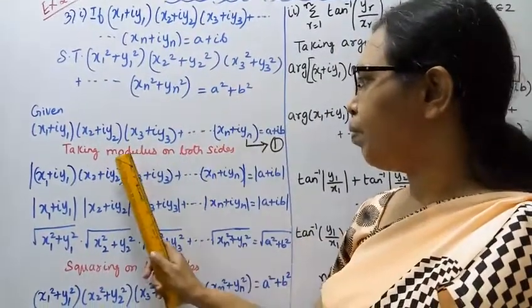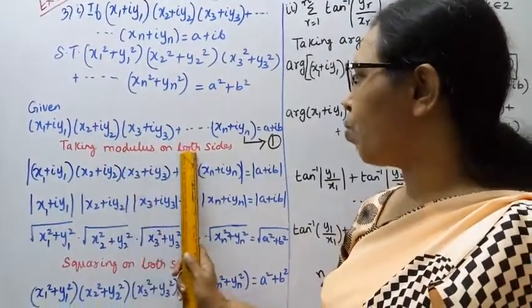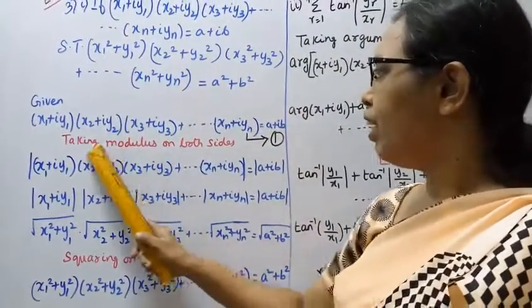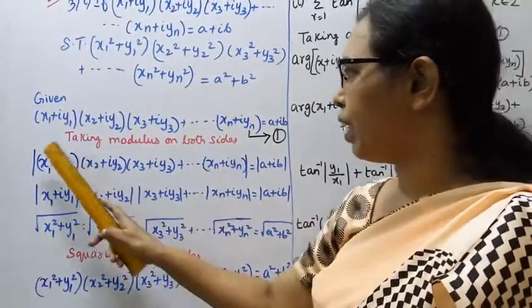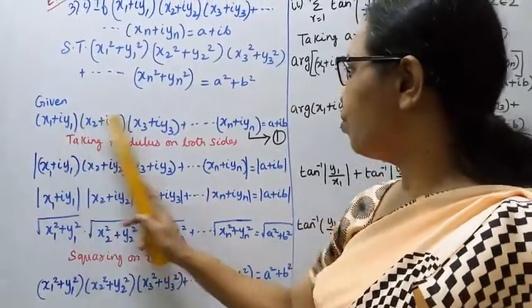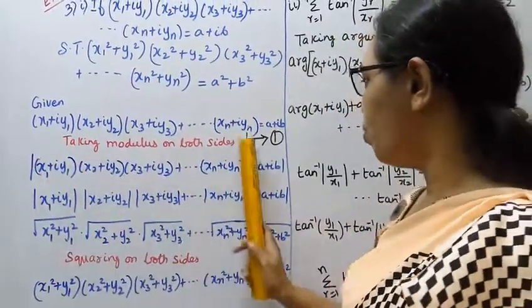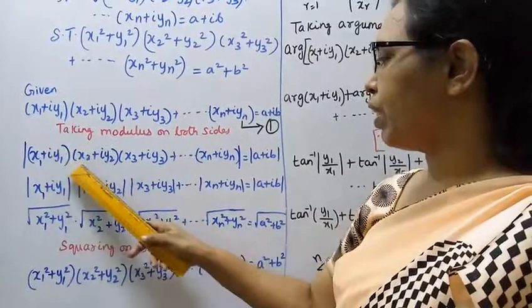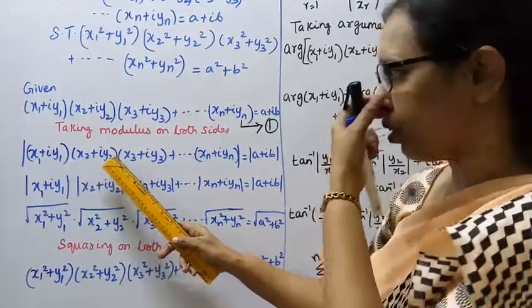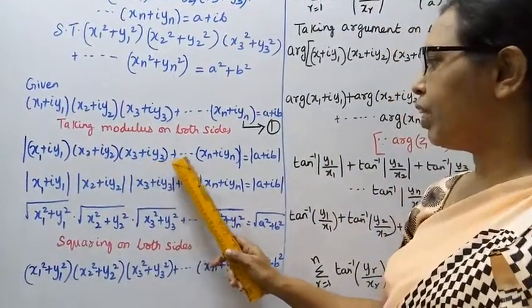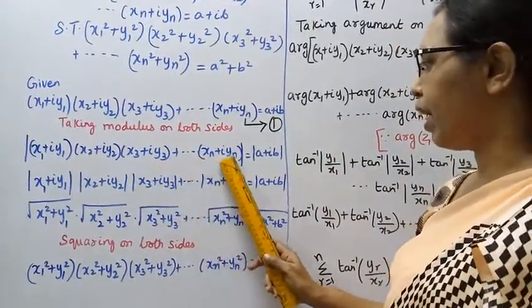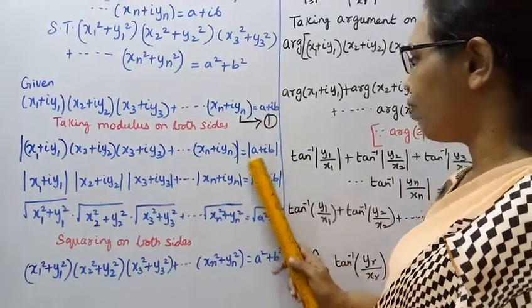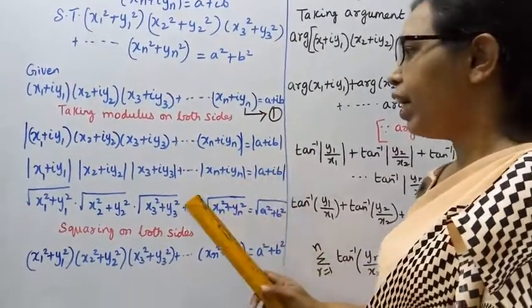To prove this, what we do is: taking modulus on both sides — left hand side to right hand side, taking modulus on both sides. So what we get is: mod of (x1 + iy1)(x2 + iy2)(x3 + iy3)...(xn + iyn) = mod of (a + ib).